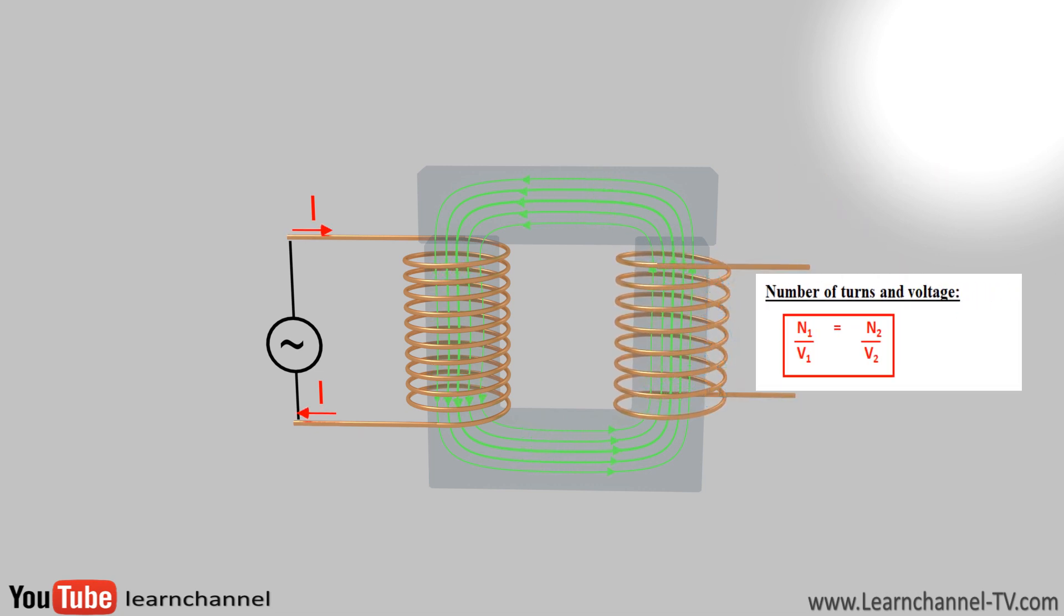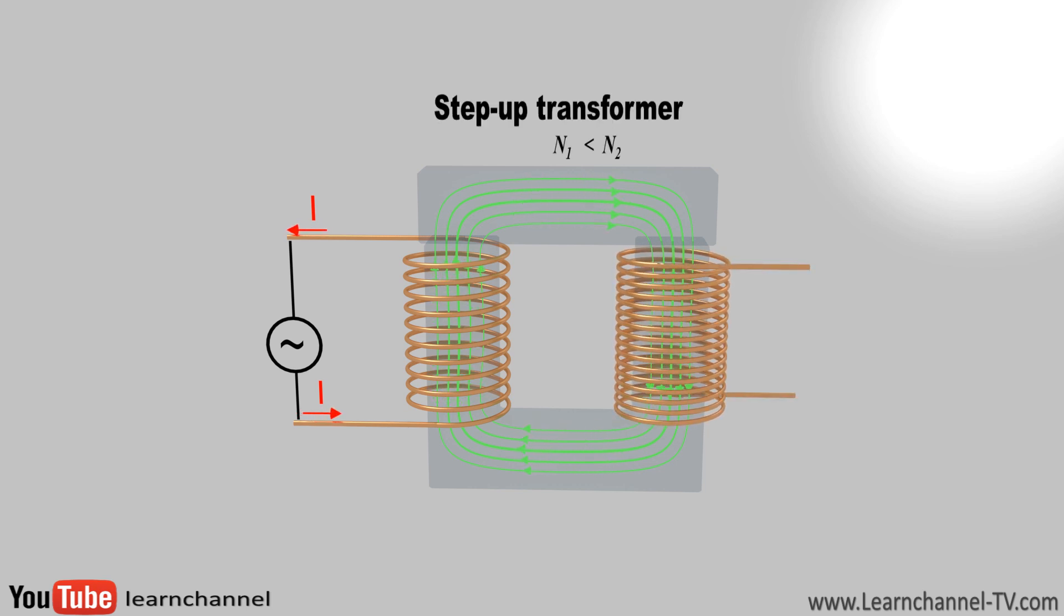Furthermore, the voltages and numbers of turns of the primary and secondary winding relate to each other as shown. And you can build a transformer with an output voltage smaller or bigger than the input voltage, depending on the ratio of the number of windings. Here, the terms step-down and step-up transformer are used.